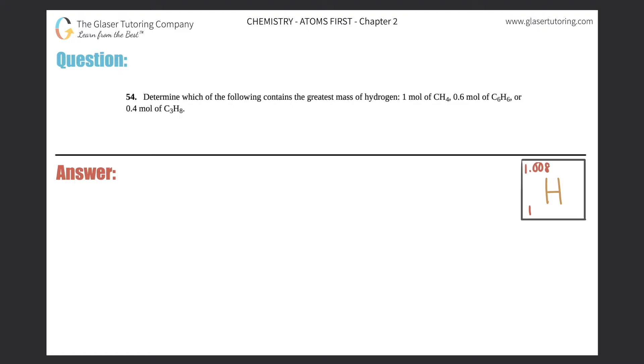Number 54. Determine which of the following contains the greatest mass of hydrogen, and then they give you three different examples. They got one mole of CH4, 0.6 moles of C6H6, or 0.4 moles of C3H8.